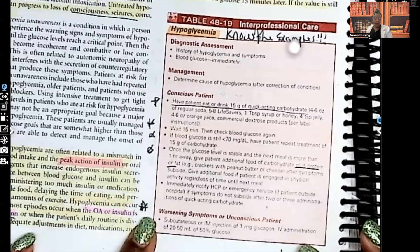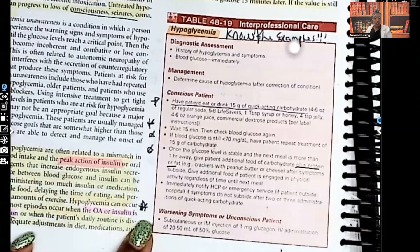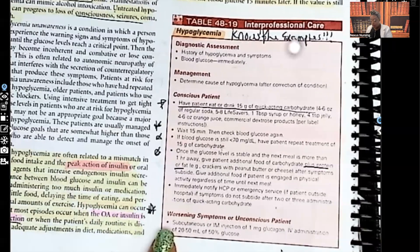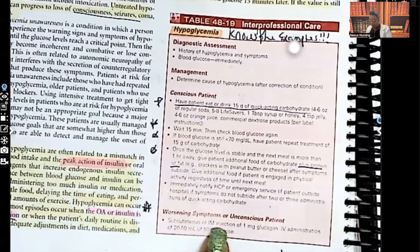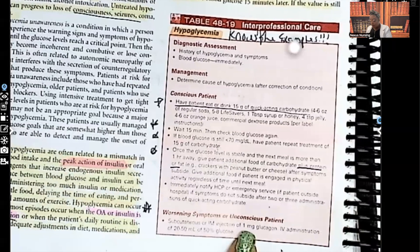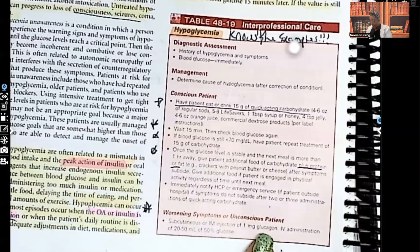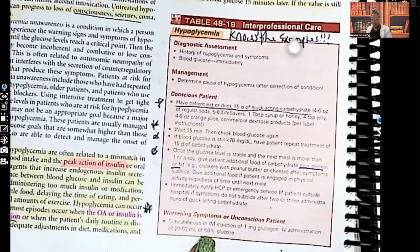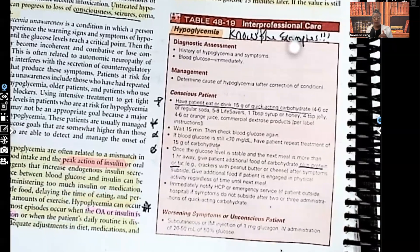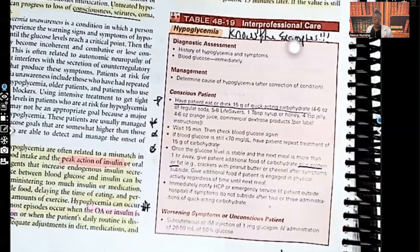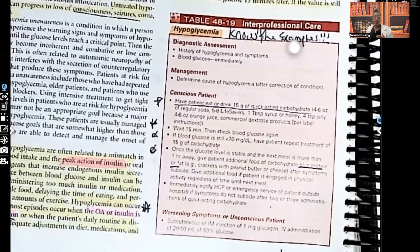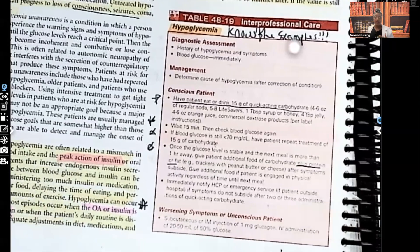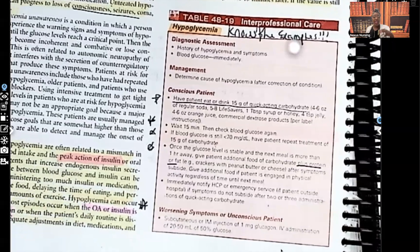For worsening symptoms or if the patient is unconscious, give a subcutaneous or IM injection of one milligram of glucagon, or IV administration of 20 to 50 milliliters of 50% glucose. If giving glucagon, place the patient on their side — preferably the left side — because glucagon can cause nausea, and if they vomit, we don't want them to aspirate.